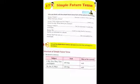Good morning students, today I am here to explain English language for Class 4: Simple Future Tense. What is Simple Future Tense? We use the Simple Future Tense to talk about an action that will happen in the future. Simple Future Tense is used when an action is promised or thought to occur in the future.